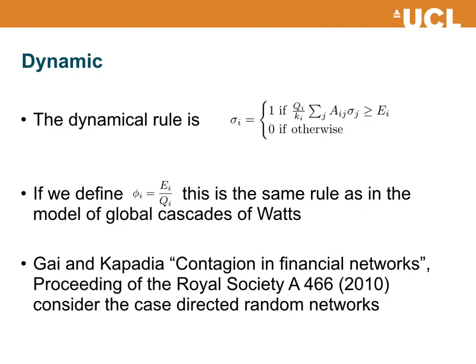Gai and Kapadia, in their paper published in 2010, considered this case of contagion in financial networks for the case of Erdos-Renyi random networks, generalizing the work of Duncan Watts to the context of interbank networks and interbank lending relationships.